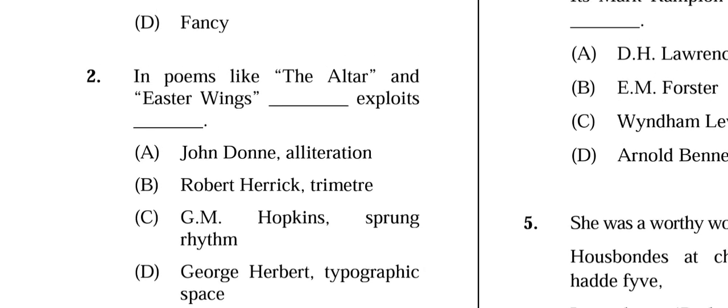Question 2: In poems like 'The Altar' and 'Easter Wings,' who exploits typographic space? Options: (A) John Donne — alliteration, (B) Robert Herrick — trimeter, (C) GM Hopkins — sprung rhythm, (D) George Herbert — typographic space. The correct answer is (D) George Herbert, who exploits typographic space.